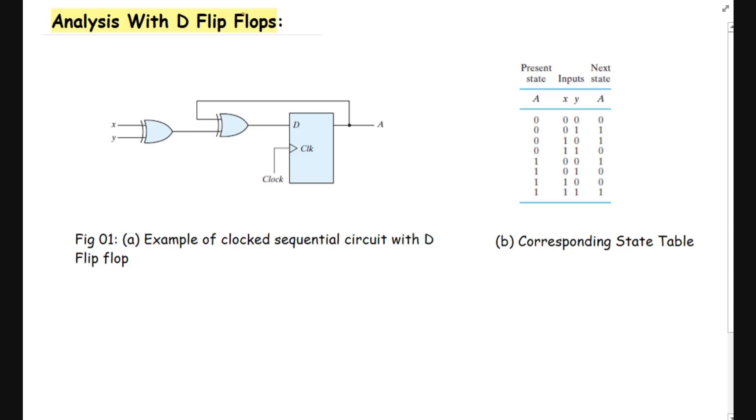First, let's analyze a sequential circuit using a D type of flip-flops. Here you can see an example of a sequential circuit where there are certain gates used such as two XOR gates for the input X and Y and then the output A. These all variables are XORed and this part of the circuit actually forms the combinational logic.